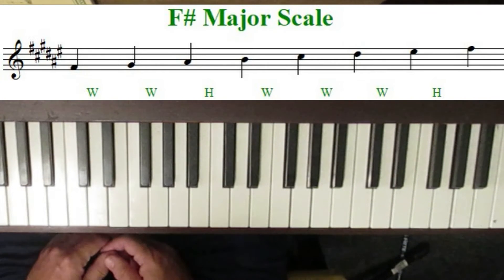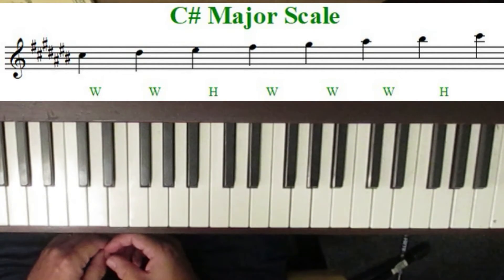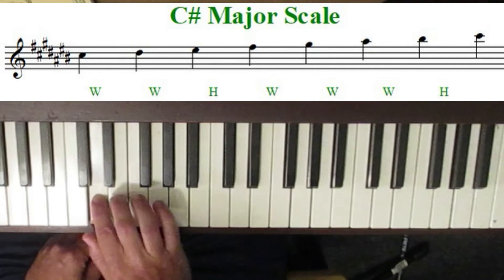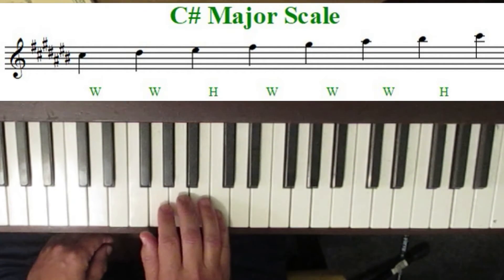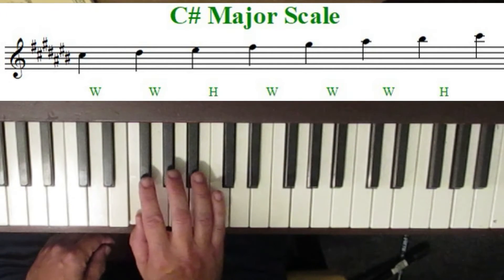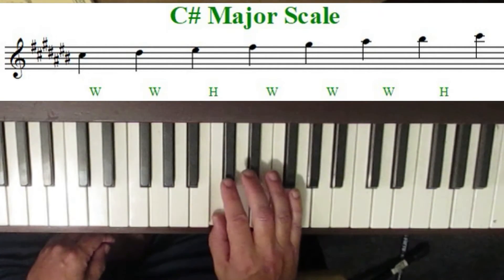There is one more sharp key, and this is called the key of C sharp major. The key of C sharp major essentially sharpens every single note that you learned in the C major scale. So if you remember C major was C, D, E, F, G, A, B, C — the C sharp major scale sharpens everything up a half step: C sharp, D sharp, E sharp, F sharp, G sharp, A sharp, B sharp, C sharp.